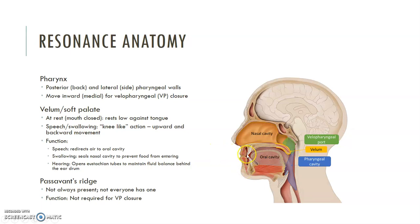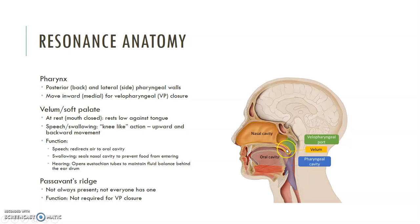We have the oral cavity, and we modify the shape of the oral cavity by changing the shape of the tongue. We have the nasal cavity — we don't change the shape of the nasal cavity, but we can direct airflow through the nasal cavity by opening and closing the velum. So the structure we're really going to focus on in this class is the velum and the pharynx that creates the velopharyngeal port.